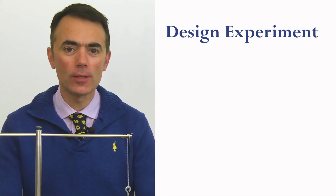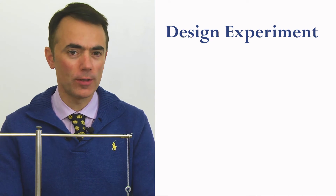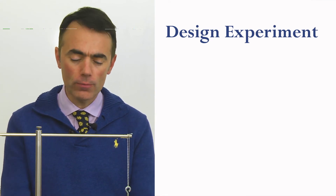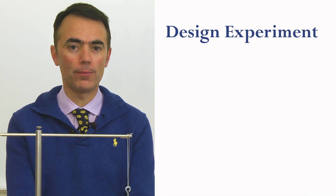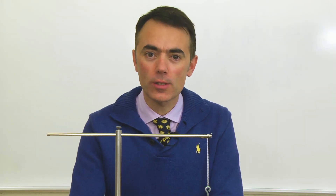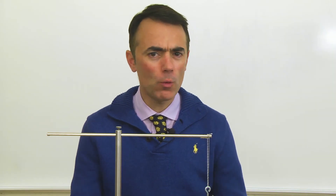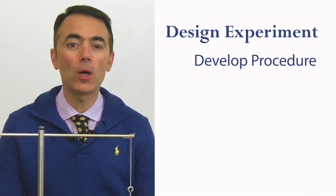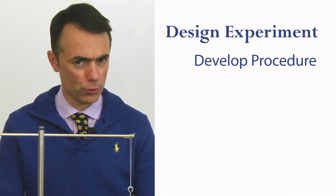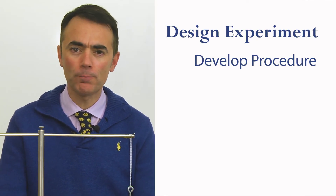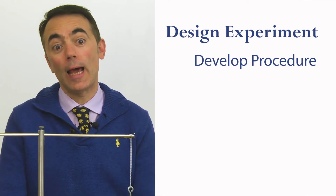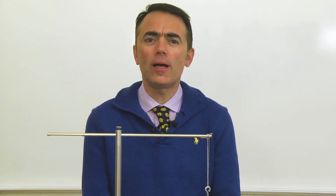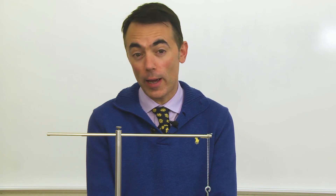Design an experiment using the equipment previously described that will allow you to verify Newton's second law for uniform circular motion. As part of the design process, play with the equipment and find what works and what doesn't. You need to develop a good experimental procedure before you take the data you wish to analyze. You may want to talk with other groups and find out what they are doing or planning to do.